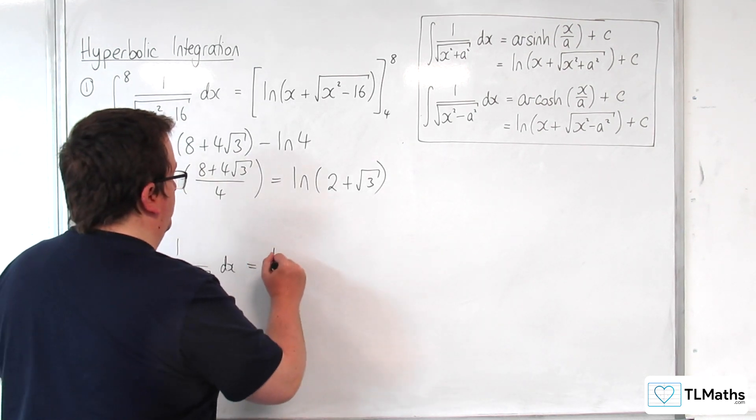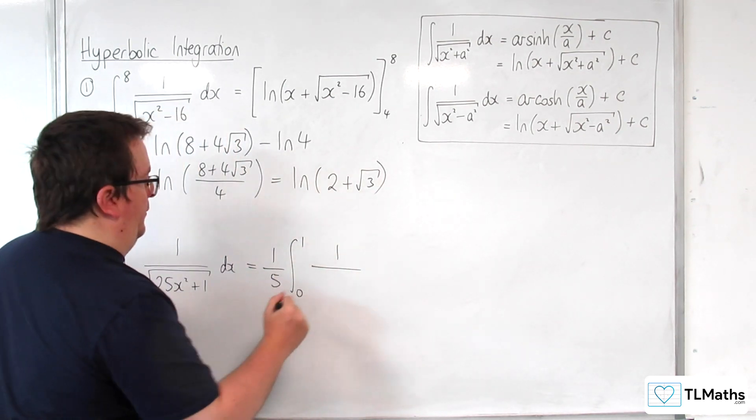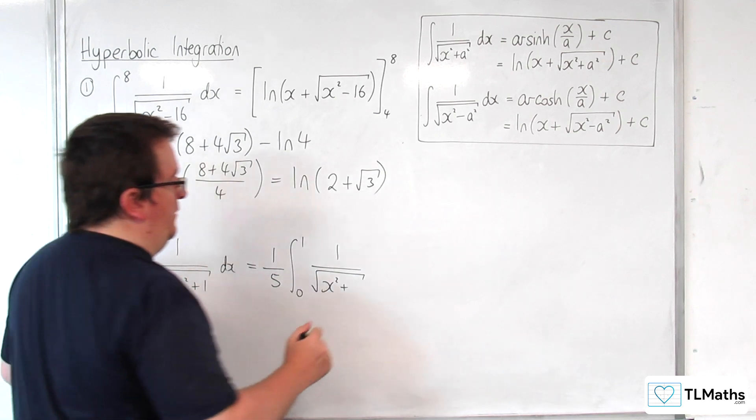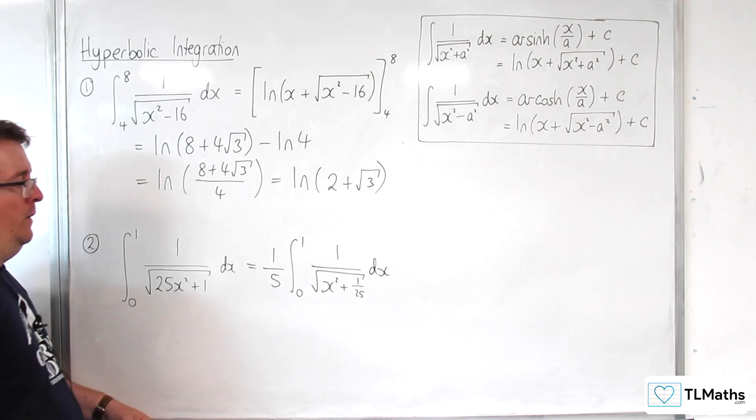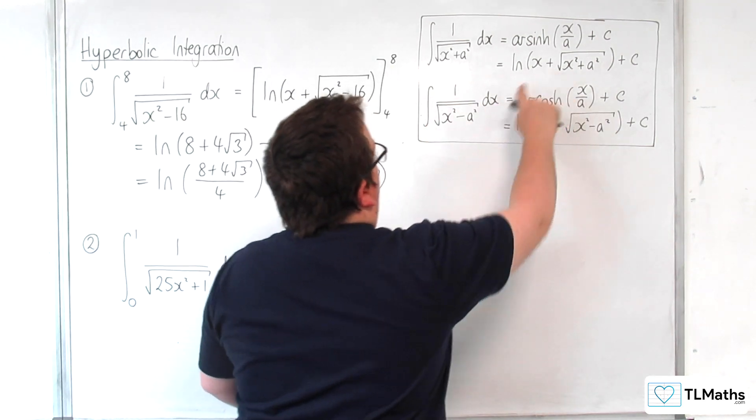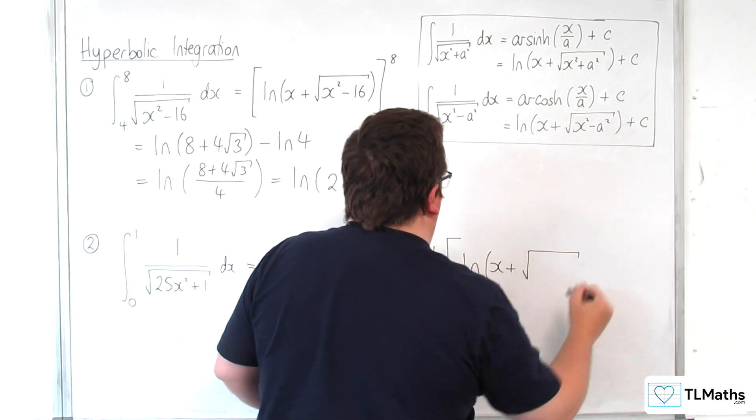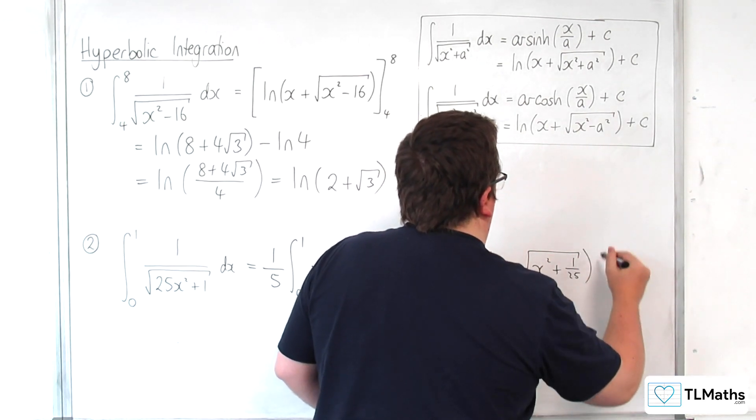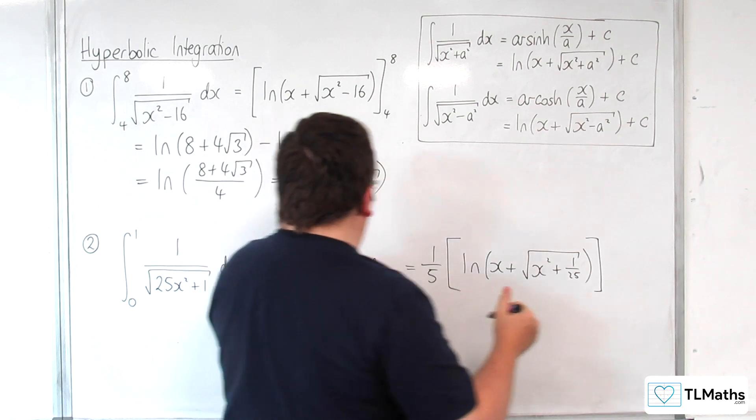We get 1 fifth times the integral from 0 to 1 of 1 over the square root of x squared plus 1 over 25, dx. This is 1 fifth times the logarithmic form: log of x plus the square root of x squared plus 1 over 25, evaluated between 0 and 1.